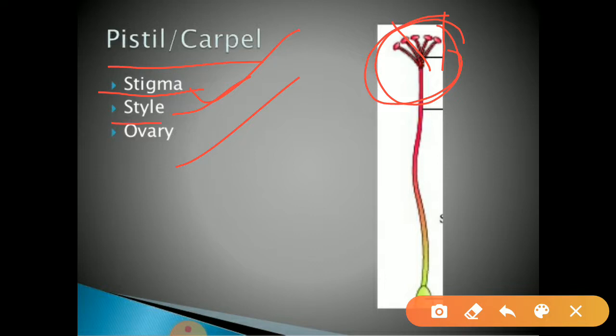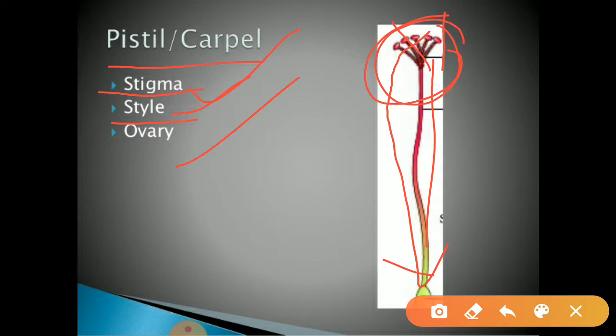Next part is style. It is the slender tube-like structure which connects stigma to the ovary. That part we can call it as style.